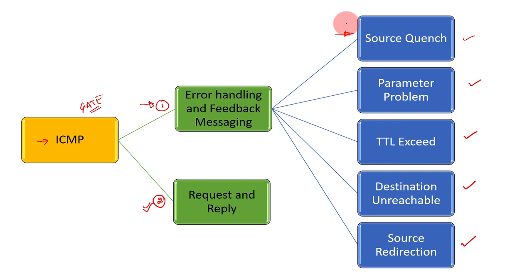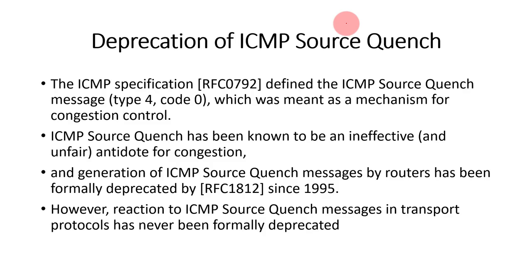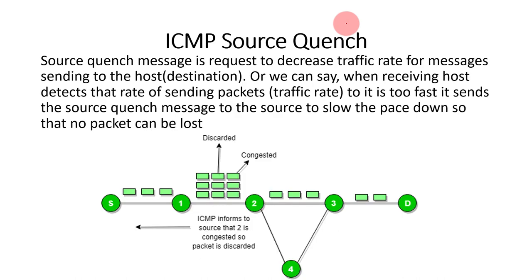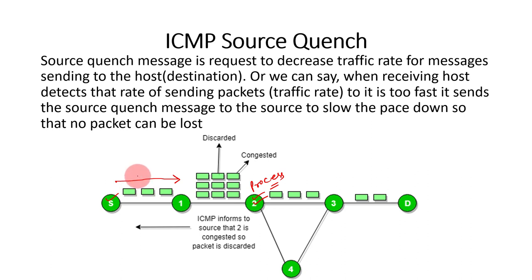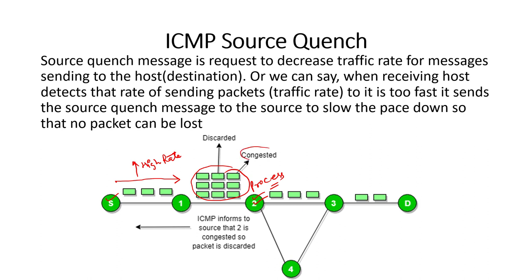Let us understand what source quench is, and then we'll see why it has been deprecated. Assume we have a sender and a receiver. The sender is sending data to the receiver, which processes it upon receipt. Sometimes the sender can send data at a very high rate or pace. If the receiver is not able to process the data at that high rate, all the packets that the sender has sent will accumulate and create congestion in the network.